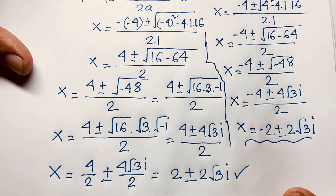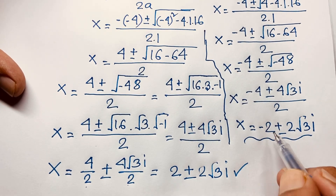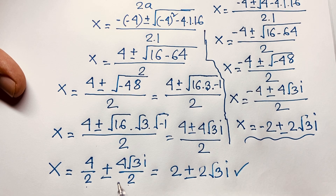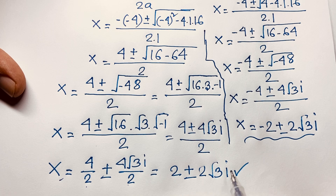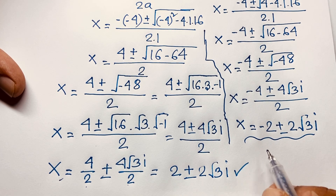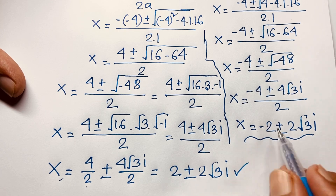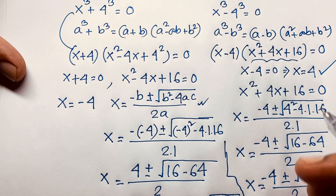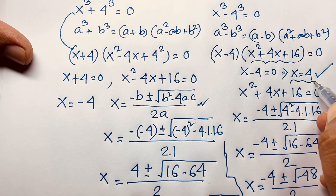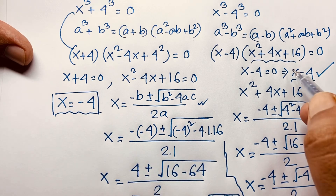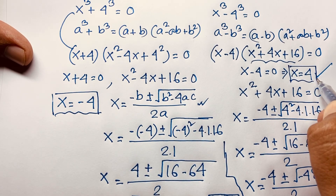So our solutions are x equals 2 plus or minus 2 square root 3 i and x equals minus 2 plus or minus 2 square root 3 i. These are complex numbers — there is no real solution from those cases. Our real solutions are x is equal to 4 and x is equal to negative 4. These are our real solutions in this exponential expression.